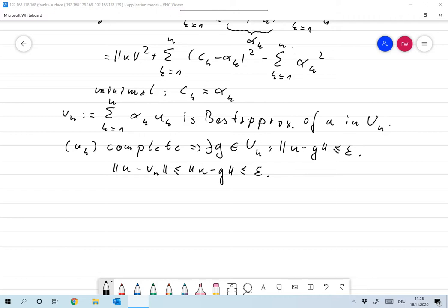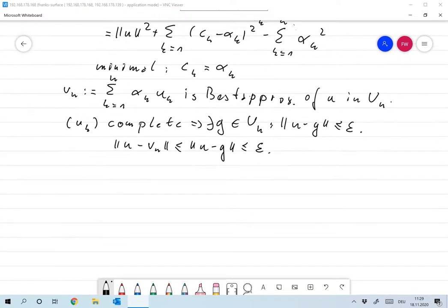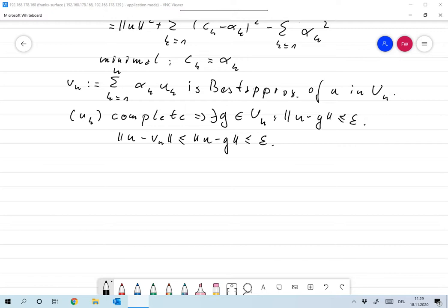And since the left-hand side is monotonically decreasing, we have that we can make U minus VN arbitrarily small. So that means that VN converges to U. And since the norm is continuous, we also have that the norm of VN converges towards the norm of U, and let me square this.